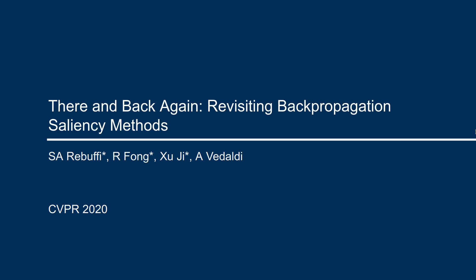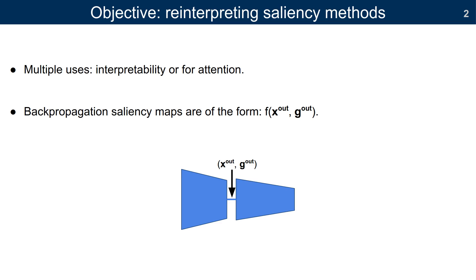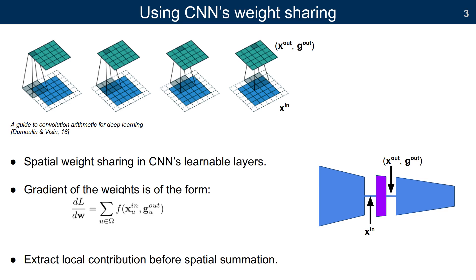We propose a principal framework unifying backpropagation saliency methods. To do that, we use the fact that the gradient of spatially shared weights can be written as a sum of the spatial locations.